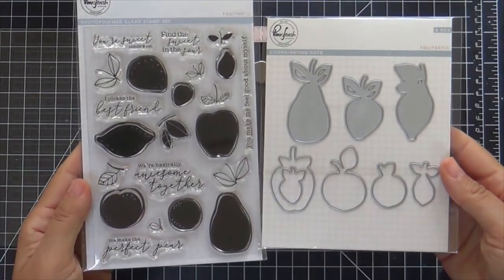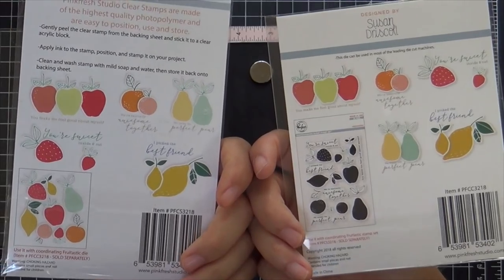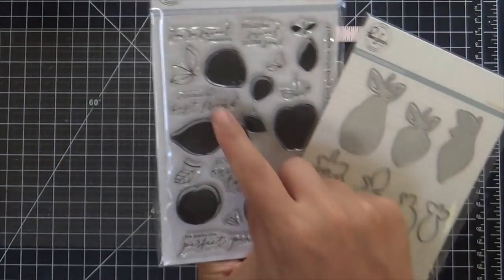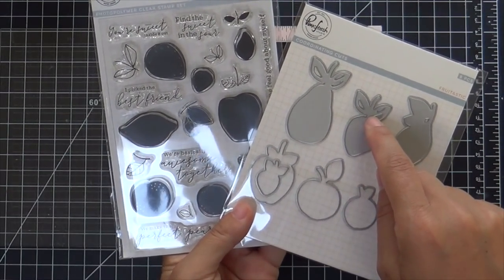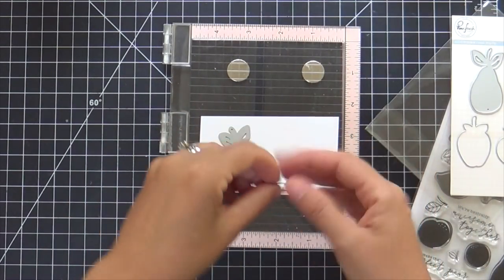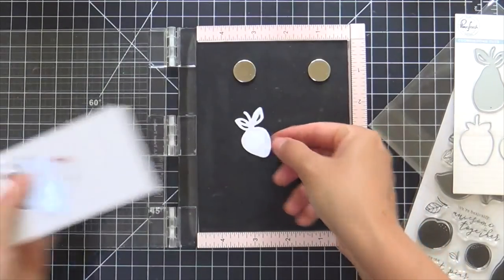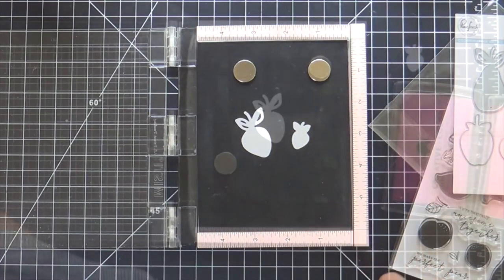Now moving on to the Fruitastic stamp and die set. I love the back of the packaging that gives you some ideas how they're supposed to look. So I'm only going to be using the larger and smaller strawberries and their coordinating dies. First I'm going to die cut onto some Neenah Solar White cardstock. Then I will end up stamping on the die cuts. It helped me get it lined up better than stamping first and then die cutting.